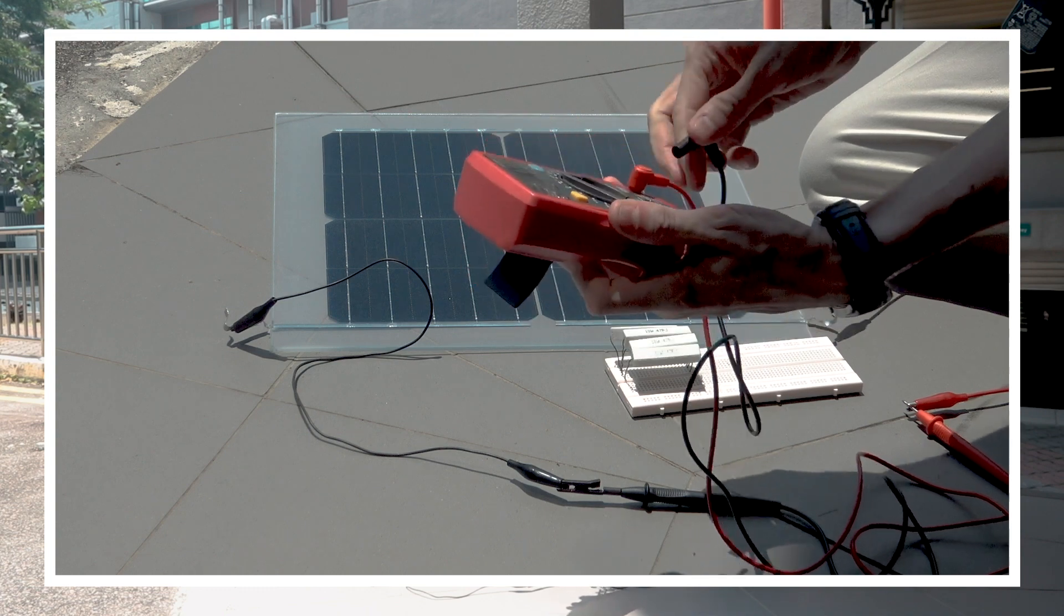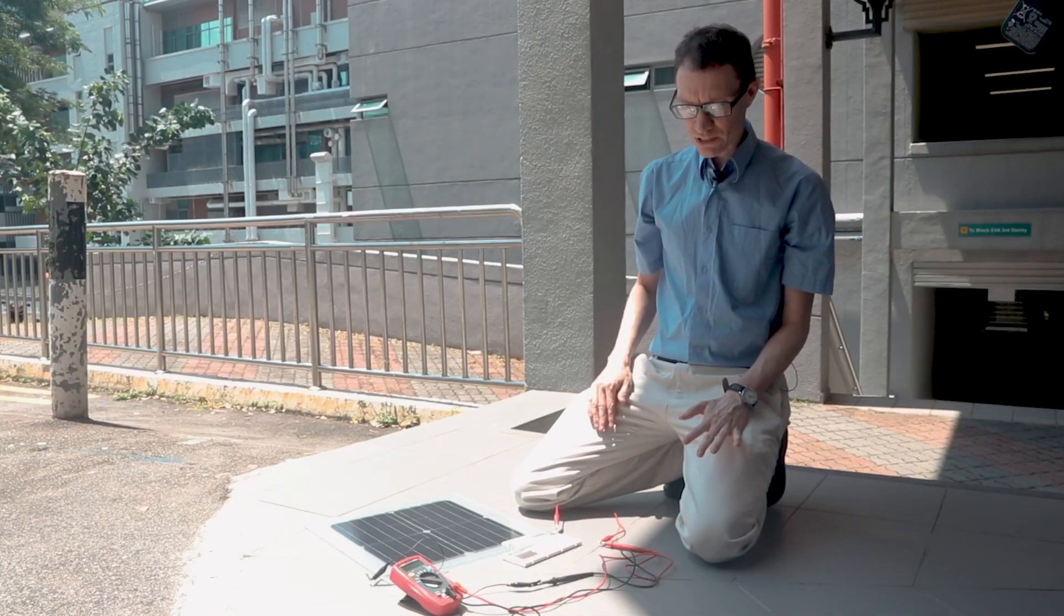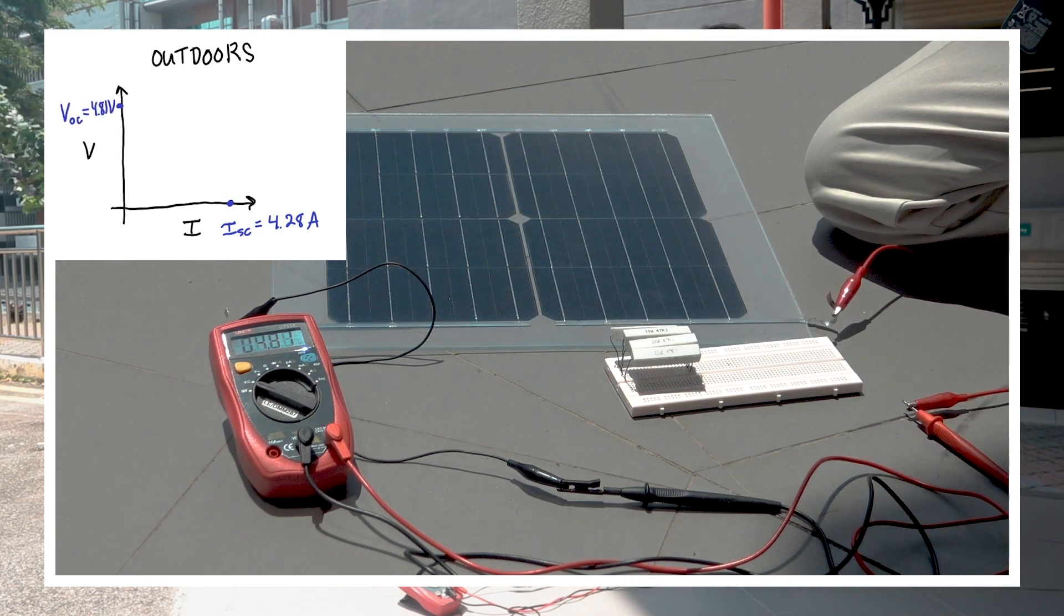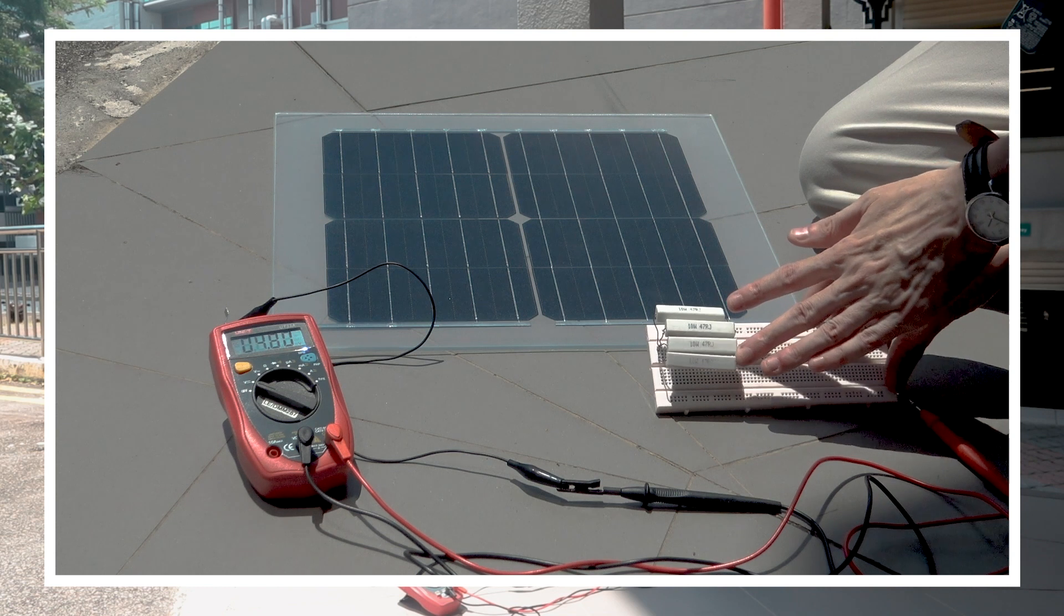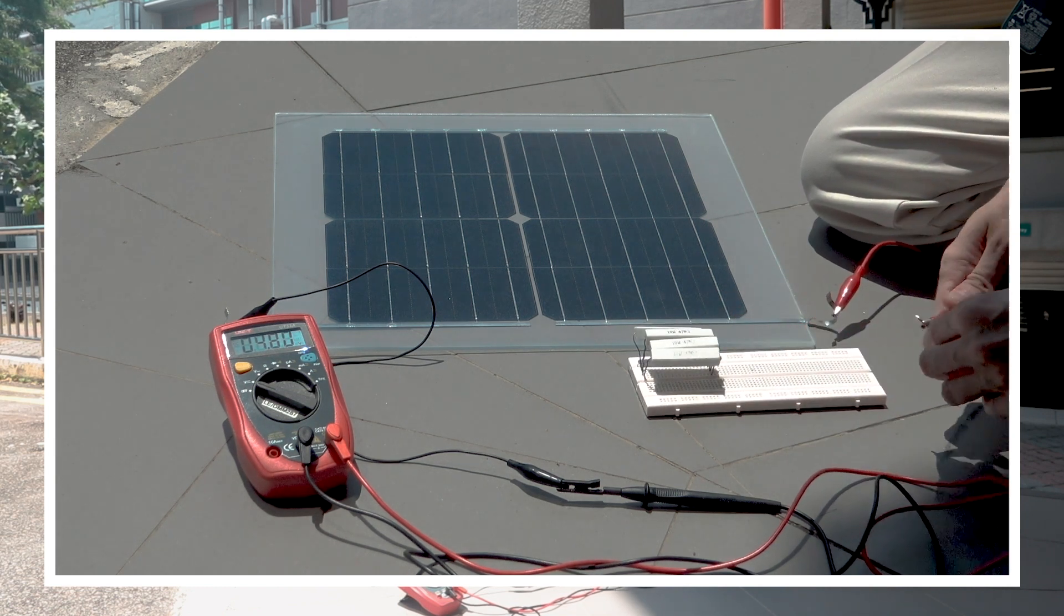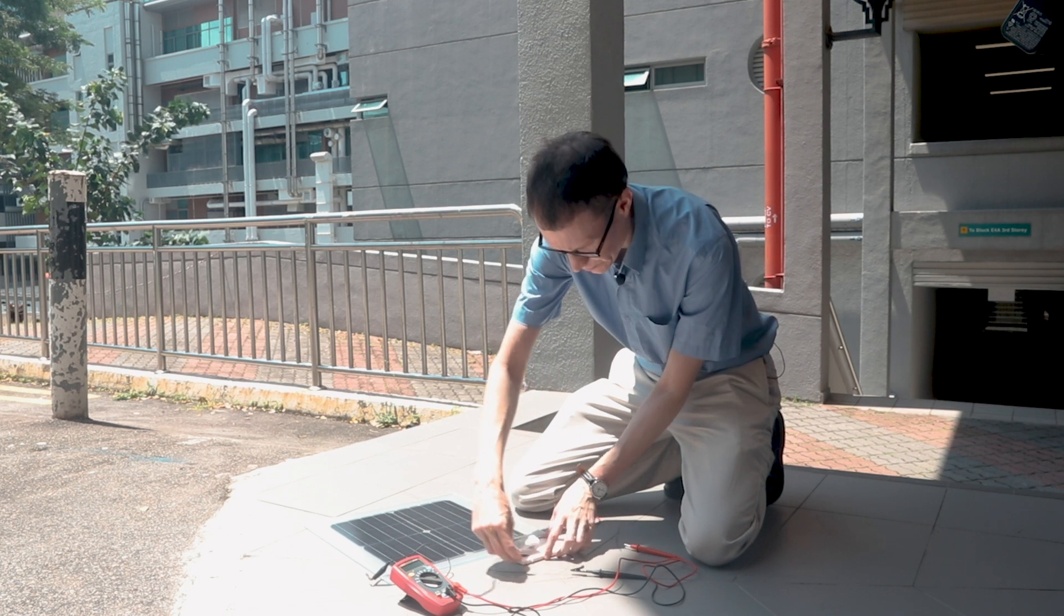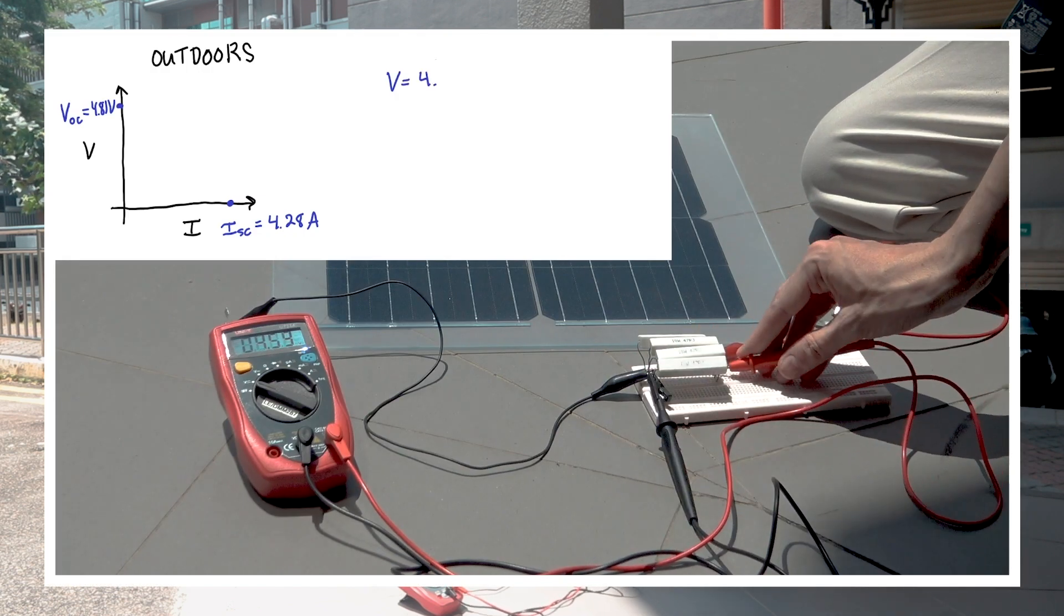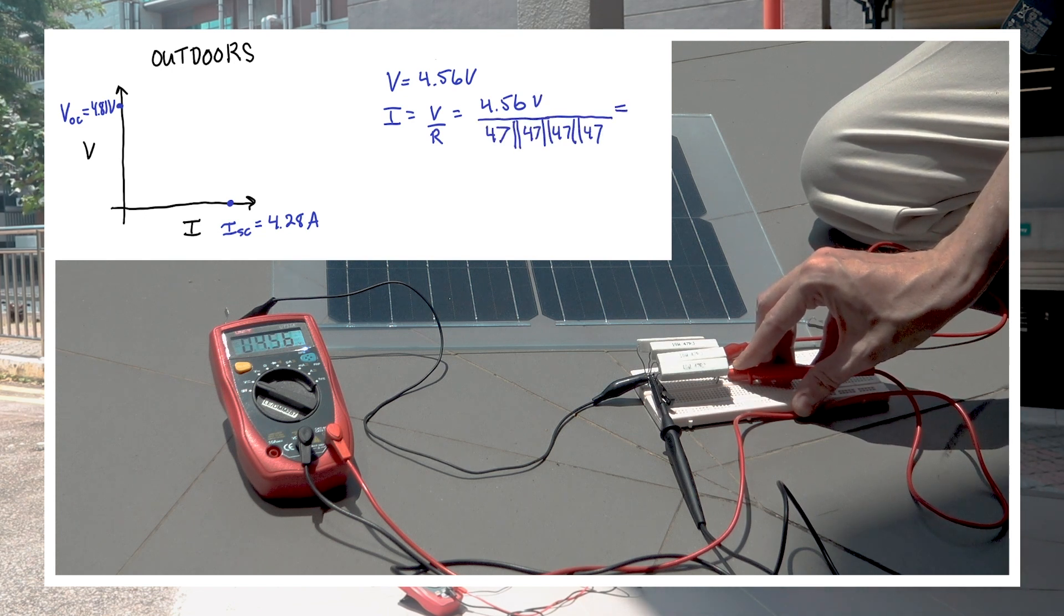Let's now measure the open circuit voltage. I'm just going to move it over to voltage, and it looks like our open circuit voltage is about 4.81 volts. Of course, as I change the amount of light falling on the cell, then the voltage will be reduced a bit. All right, for the third measurement, I've got four power resistors. They're all 47 ohms. They're hooked up in parallel.